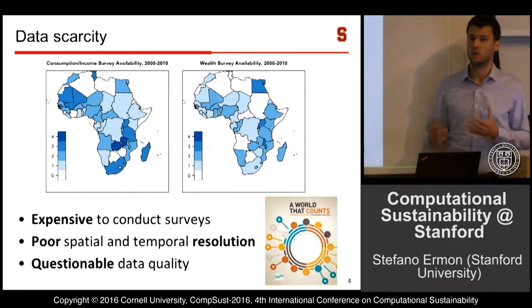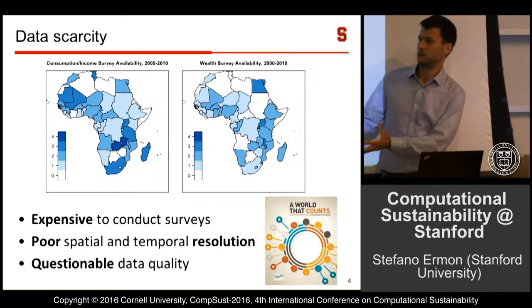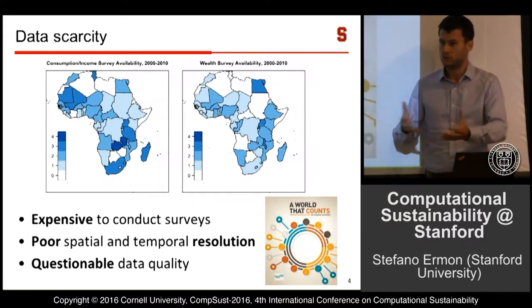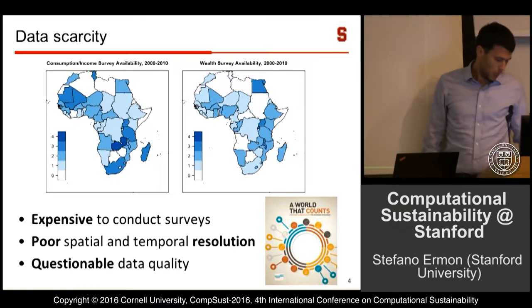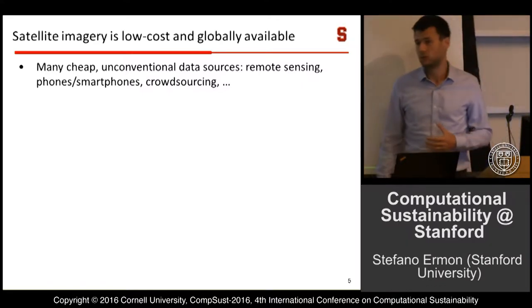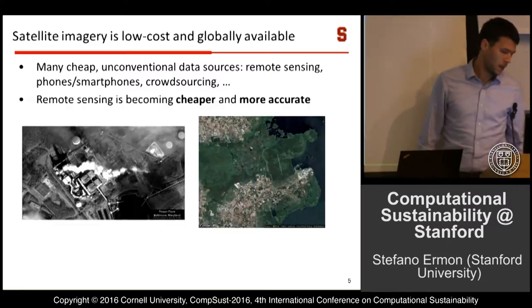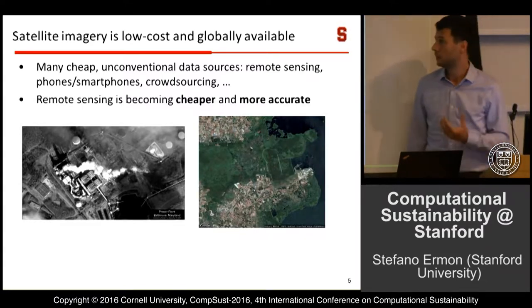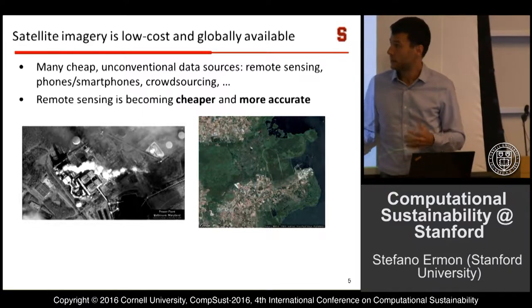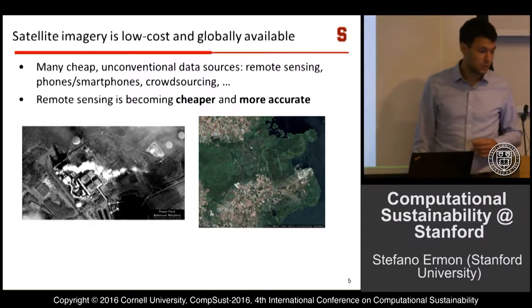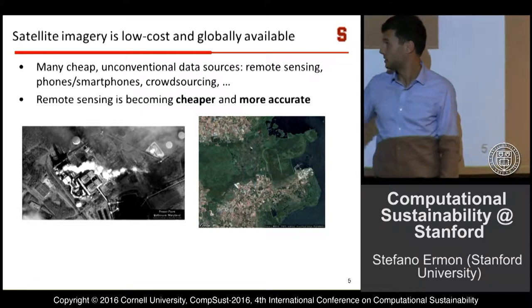As you can imagine, that's a problem. If we don't have data, we don't know how well we're doing, whether we're meeting the target of eliminating poverty, whether policies are working, or what drives the variation of poverty in developing countries. So what we tried to do was use AI and machine learning to estimate poverty using unconventional data sources — in particular, remote sensing data, which is becoming cheaper and better with new technologies.